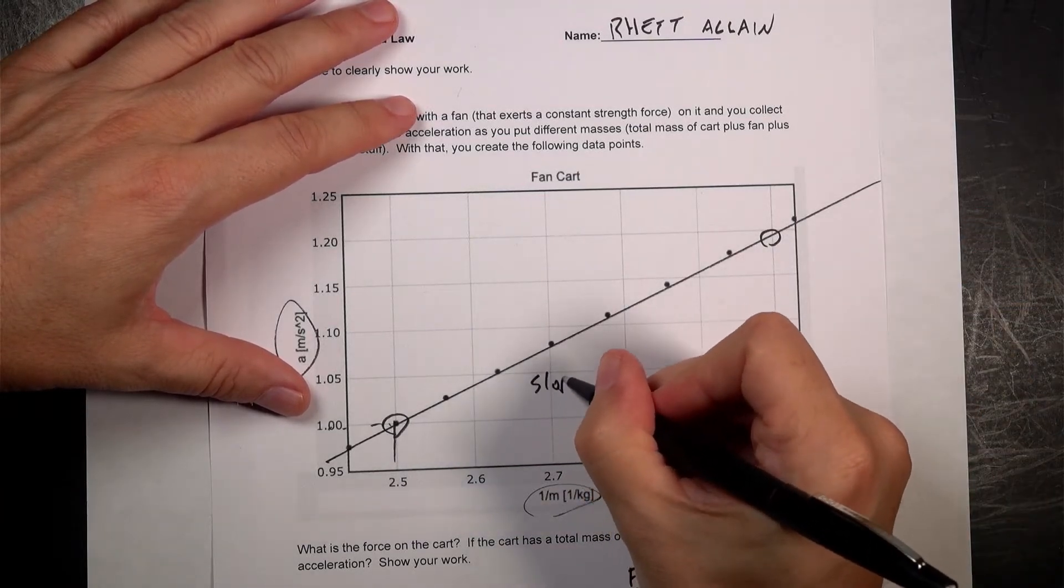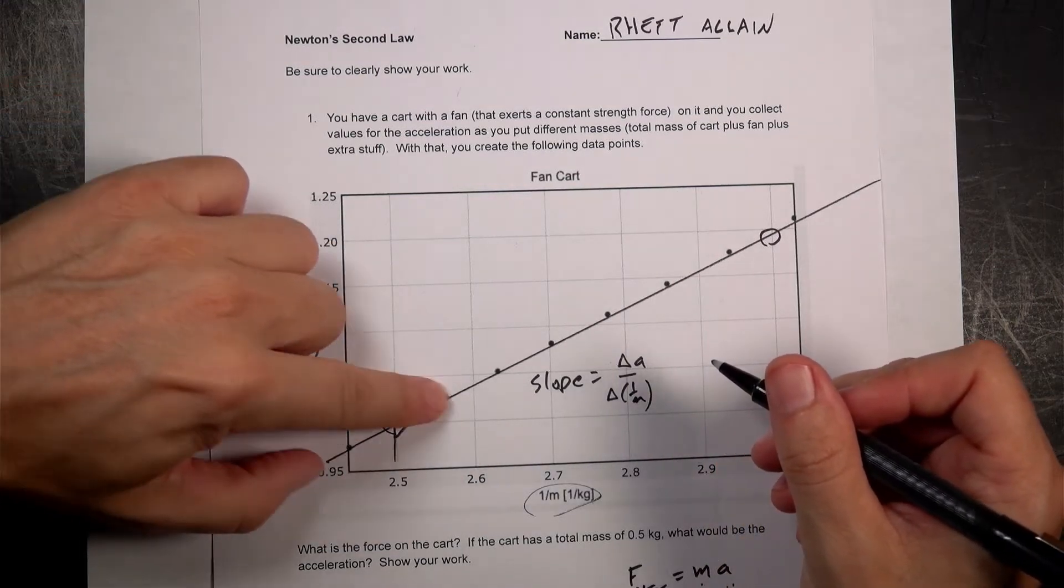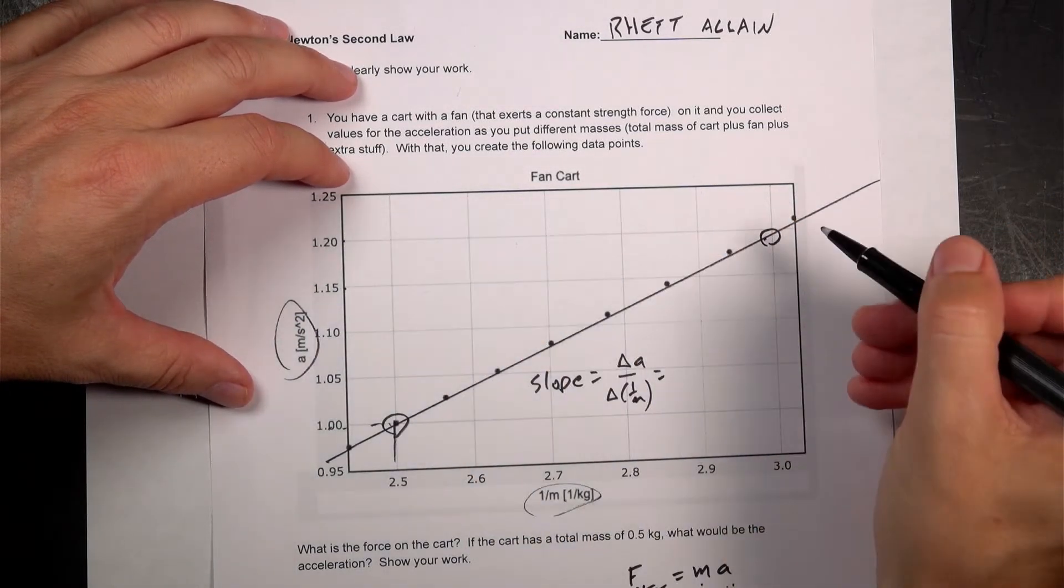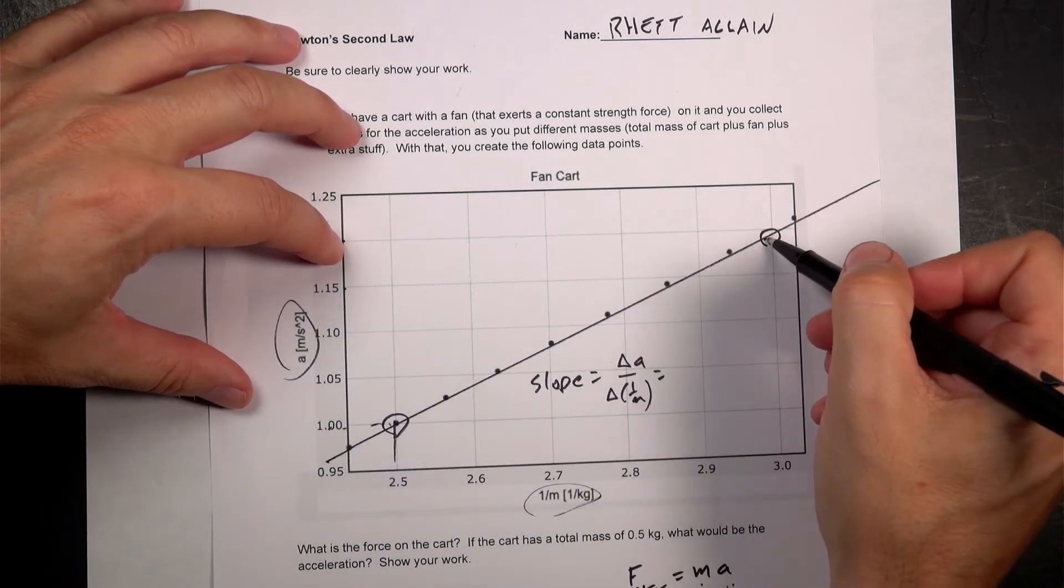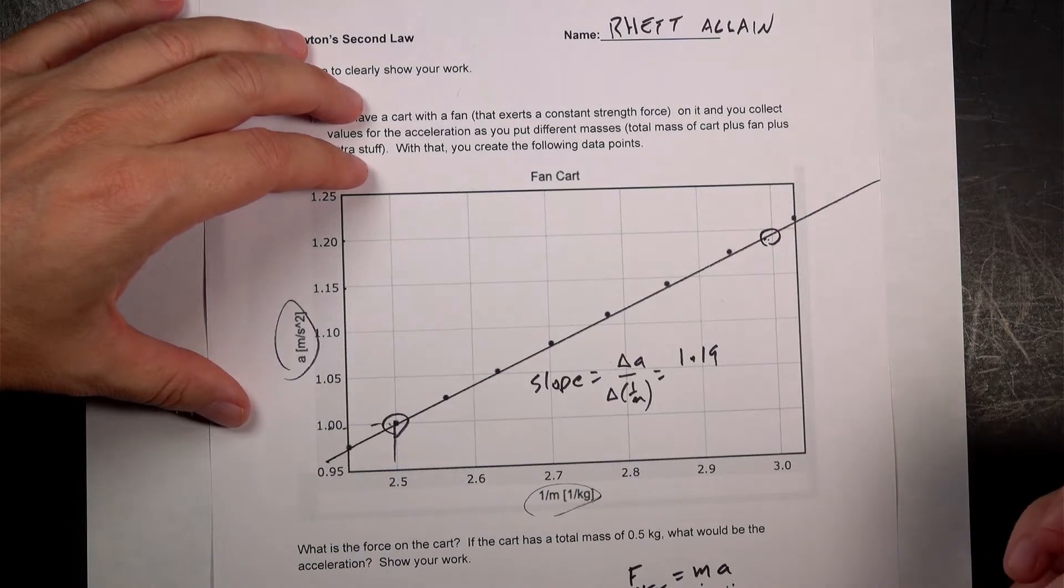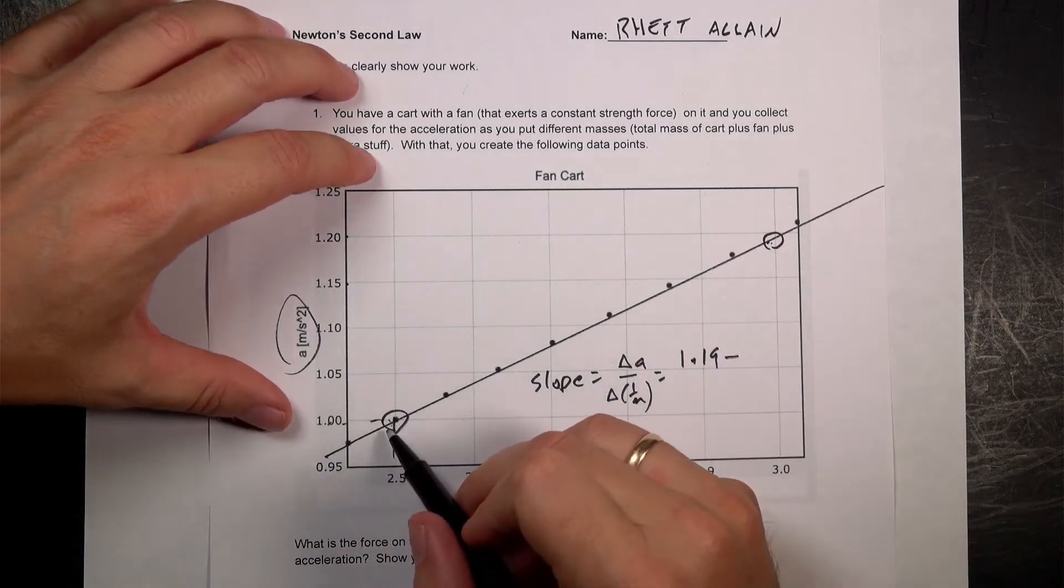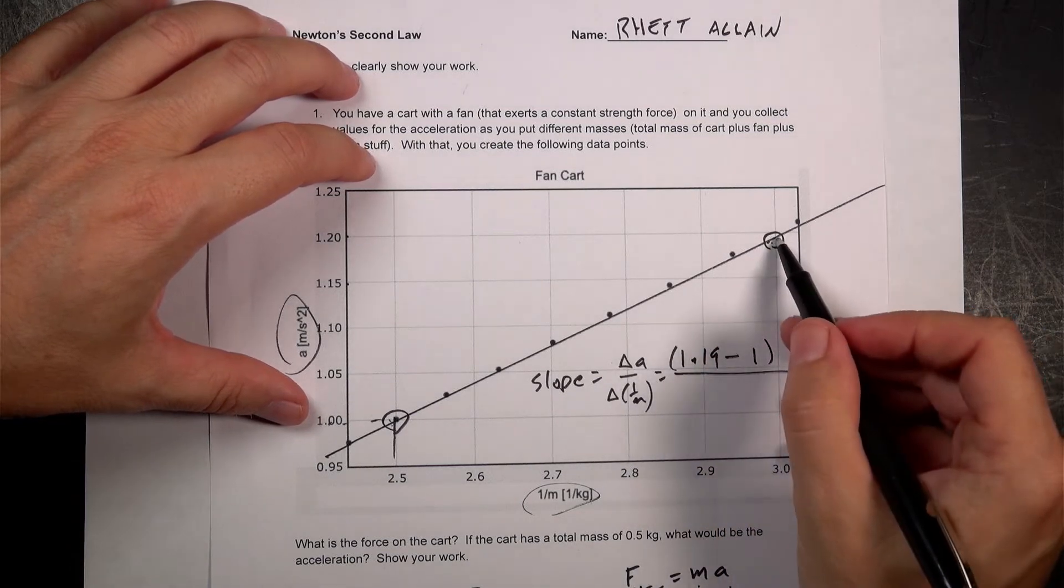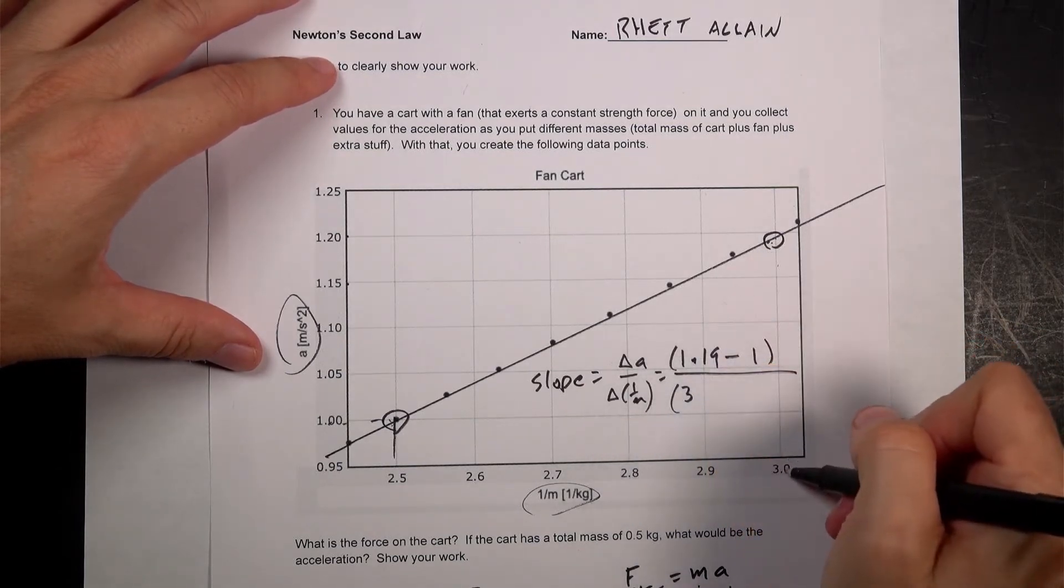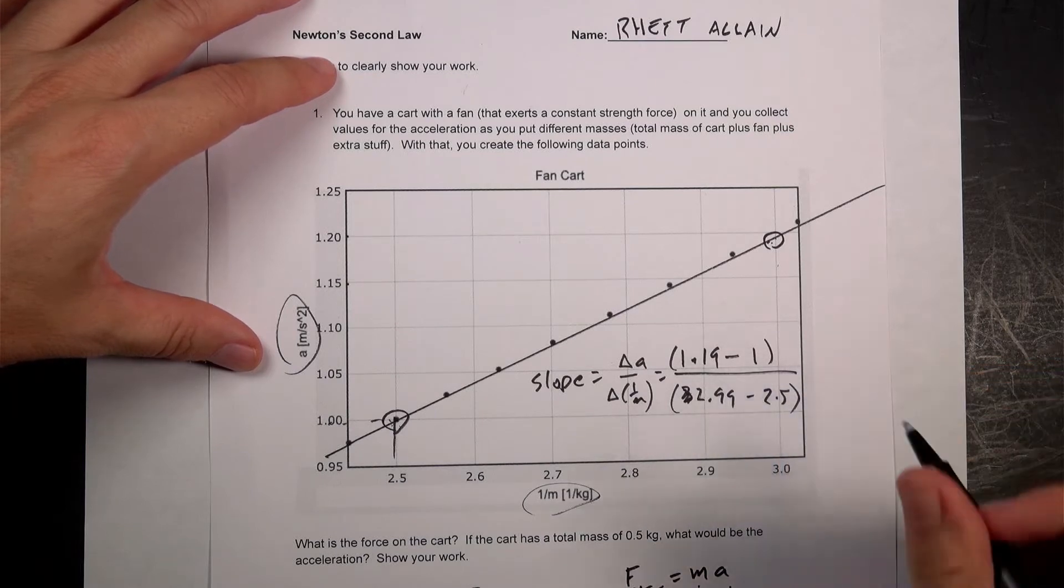So I'm going to say the slope is the change, I'm going to write it as delta A over delta one over M. It's a change in this divided by the change in that. So that's going to be my acceleration values. So now I'm going to need to estimate. So that's 1.15, that's 1.2. So this would be, there's 0.05 units between here. So let's say this is 1.19. So 1.19 minus the acceleration down here, which is 1, and then divide by the change in the 1 over M. So this is going to have a value of 3, actually a little bit less than that. So let's say 2.99, just to be fair. And then this has a value of 2.5.